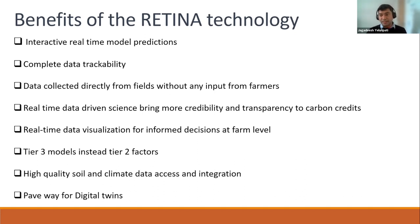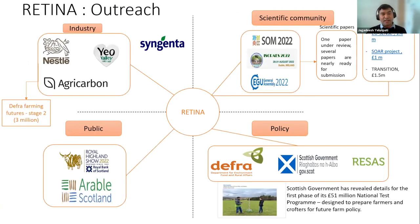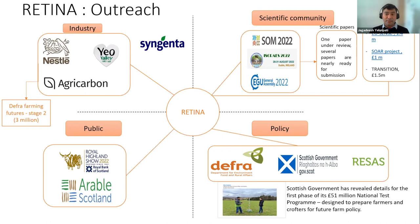We use Tier 3 models instead of Tier 2 factors — an enhancement in methodology — along with high-quality soil and climate data integration. This will pave the way for digital twins, as creating a real-time system is one of the three requisites for digital twins. In terms of RETINA's outreach, we've engaged with industry, the scientific community, policy, and the public. We've presented at the Royal Highland Show and Arable Scotland, interacting with many farmers. Industry discussions have included Syngenta, Nestlé, Yeo Valley, and Agri Carbon.